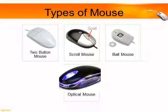An optical mouse uses light instead of a ball for movement of the mouse pointer.